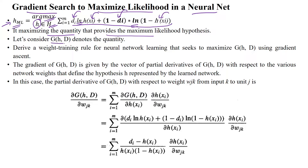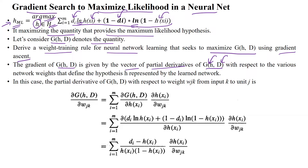Let g(h, D) denote this quantity. We derive a weight training rule for neural network learning that is searching to maximize that quantity — that is, maximize the performance of our model by using gradient ascent. The gradient of g(h, D) is given by the vector of partial derivatives of g(h, D), where h is the hypothesis with respect to the given dataset D.